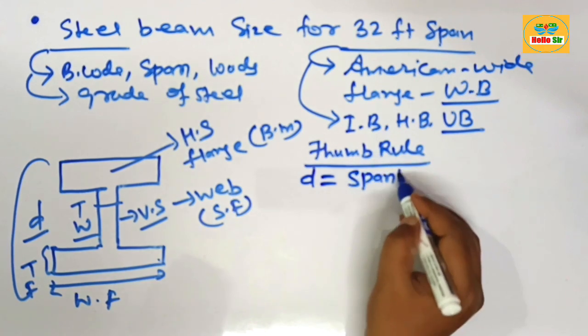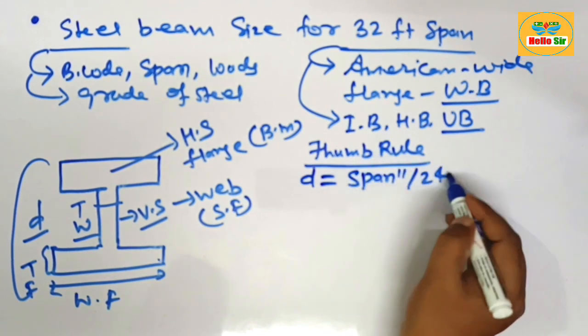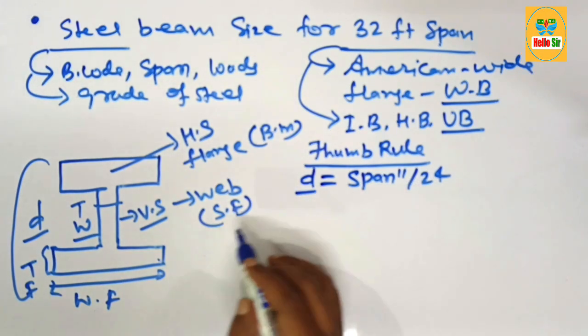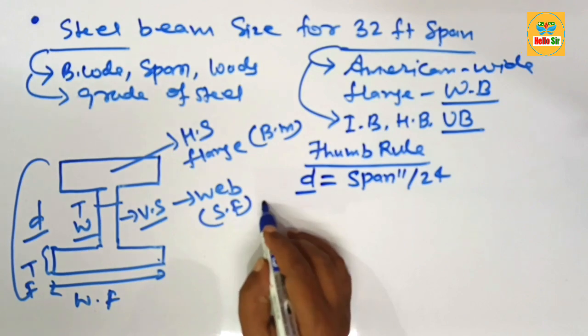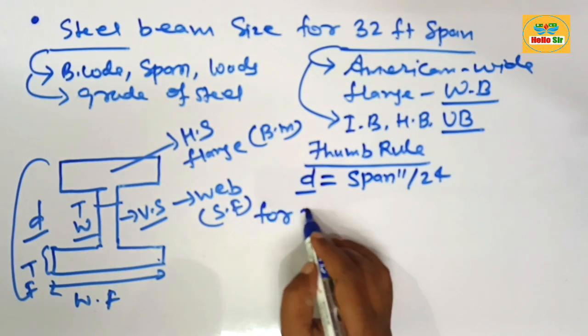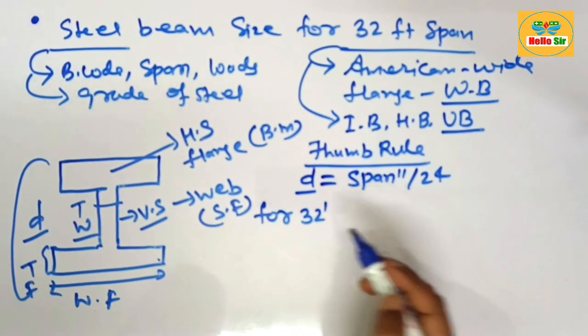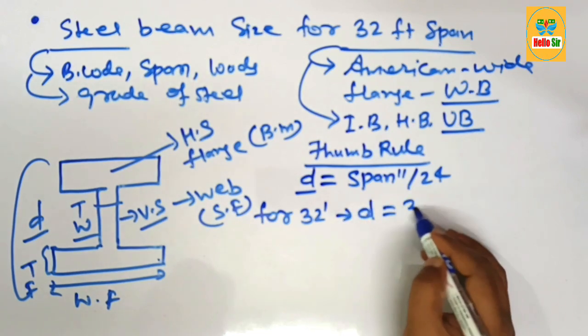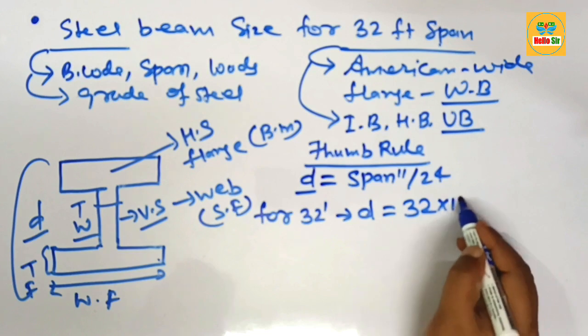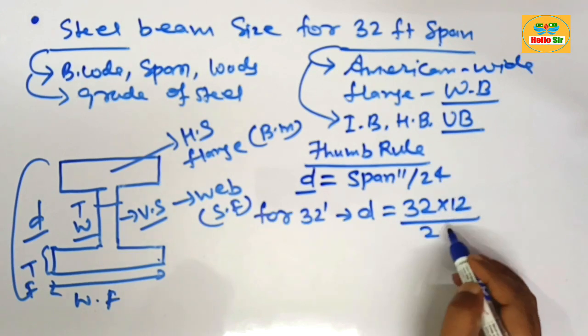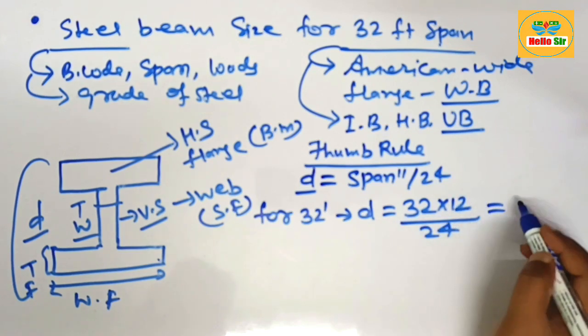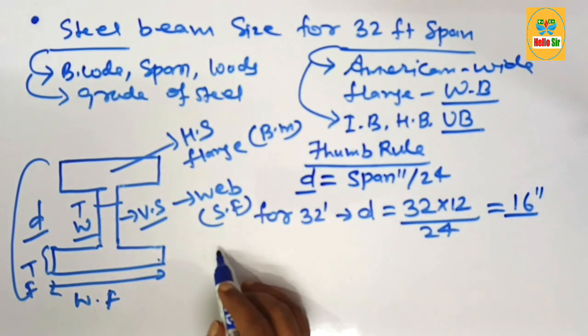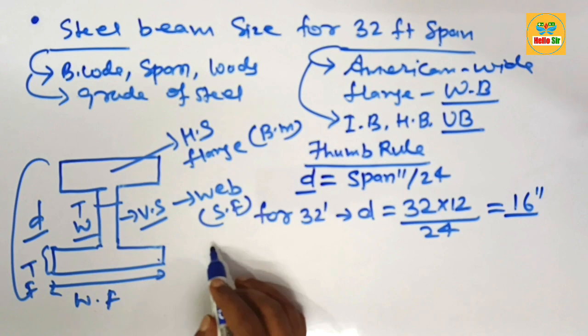Here you have the span length 32 feet. For 32 foot span length, your depth should be just multiply 32 by 12 and divide by 24. This will come about 16 inches. It means you need American wide flange W 16 inch beam for 32 foot span length.